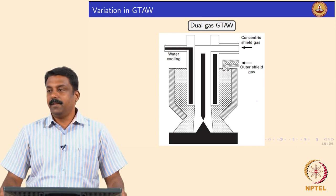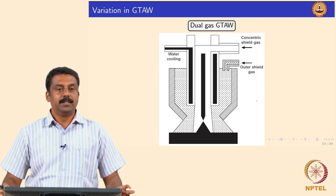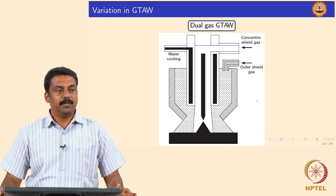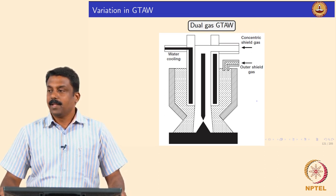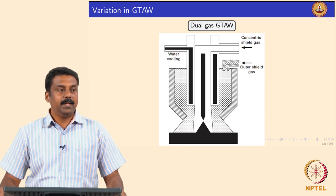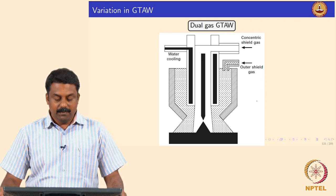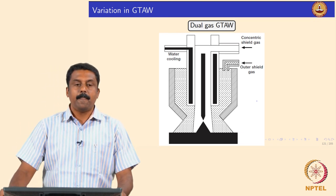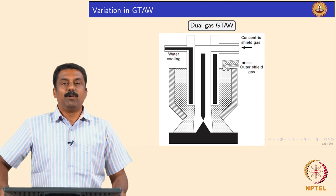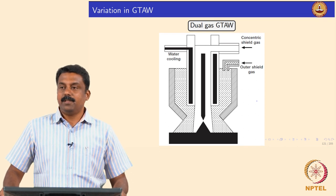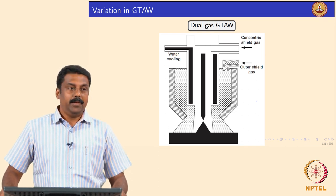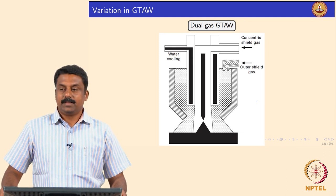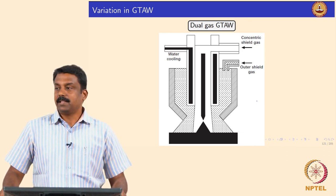We will move on to another modification. We looked at pulsed square wave DC, variable polarity DC, and then cold and hot wire GTAW. Now we will move on to another interesting modification we have done in GTAW, which is commercially used extensively, and that is plasma.